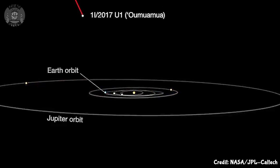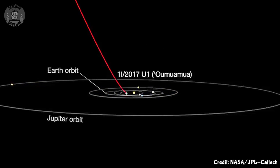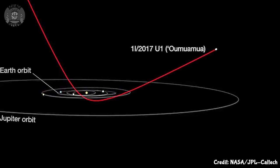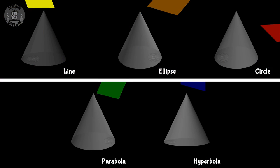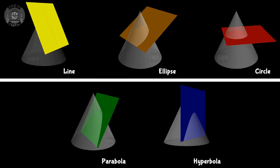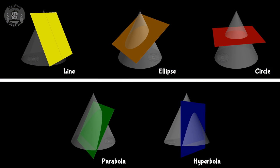Like that Oumuamua object everyone was excited about a couple years ago. These five basic solutions are what we call the conic sections, because they can be found when a plane cuts through a cone. They're the solutions of the two-body problem. Actually, those aren't very realistic solutions.